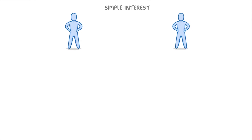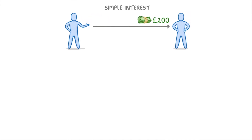In today's video, we're going to look at simple interest and see how we can calculate it. To understand how it works, let's imagine that you had £200 of savings, and that you lent it to somebody at a simple interest rate of 3% a year.